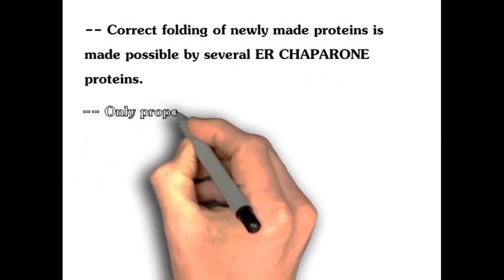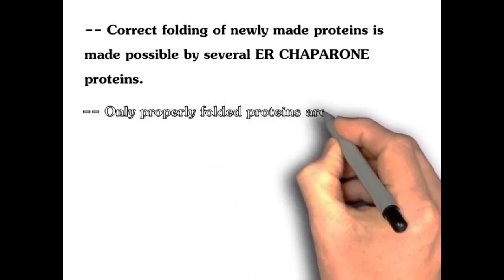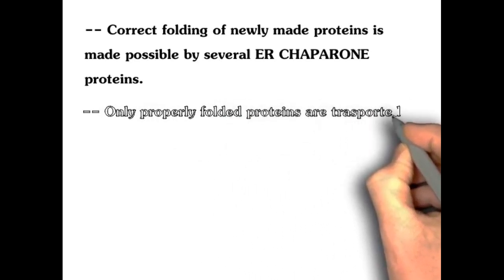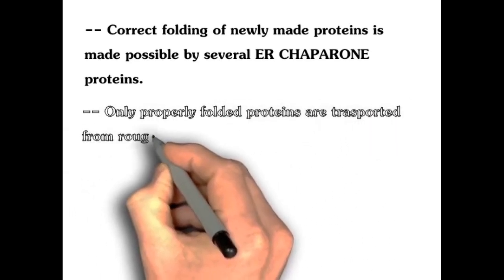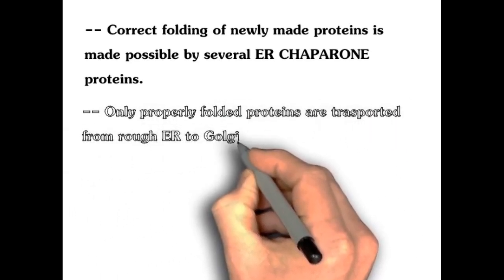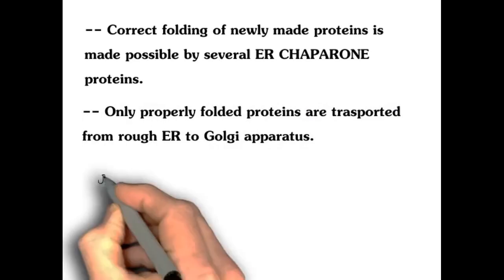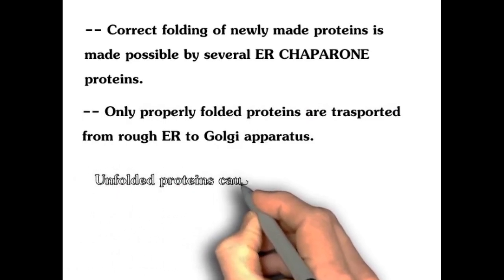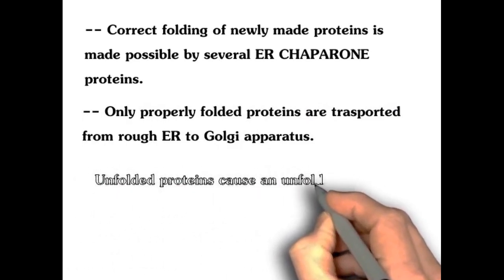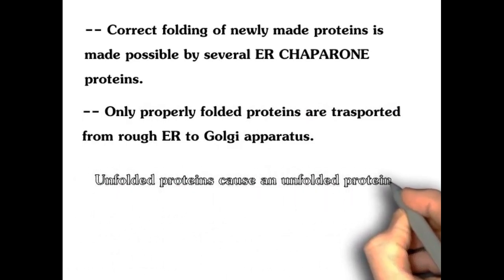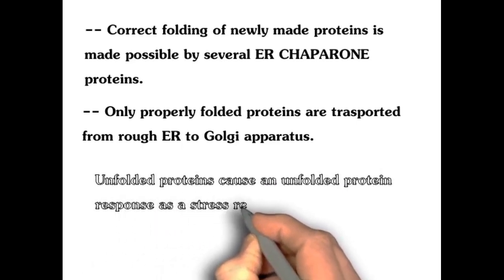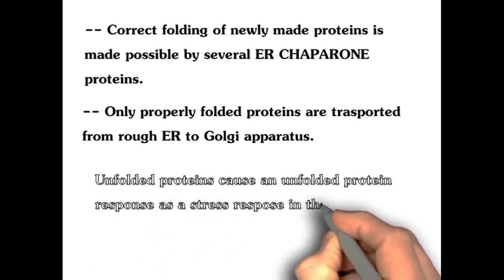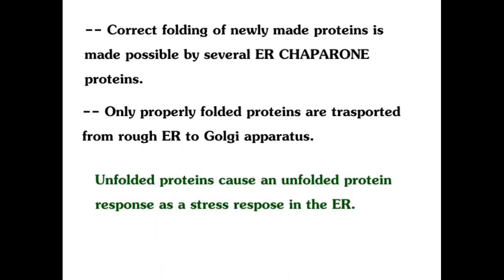Only properly folded proteins are transported from the rough endoplasmic reticulum to the Golgi apparatus. Unfolded proteins cause an unfolded protein response as a stress response in the endoplasmic reticulum, which we will see in the applied part.